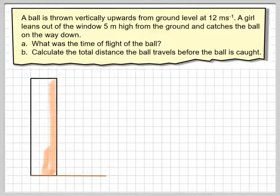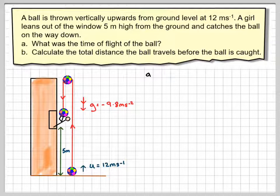So if you're doing this in an exam, you draw a diagram. So you have a ball, initial velocity 12 meters per second, g acting downwards, this is 5 meters, and here is the girl catching the ball.